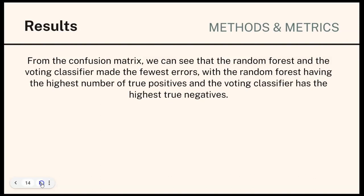From the Confusion Matrix, we can see that the Random Forest and the Voting Classifier made the fewest errors, with the Random Forest having the highest number of true positives and the Voting Classifier has the highest true negatives.